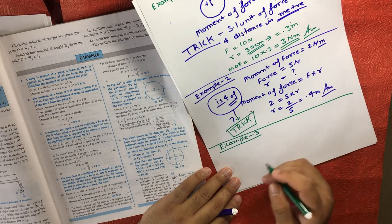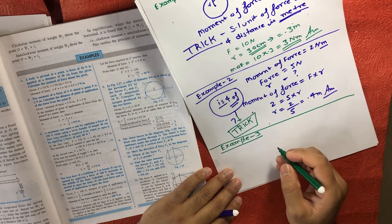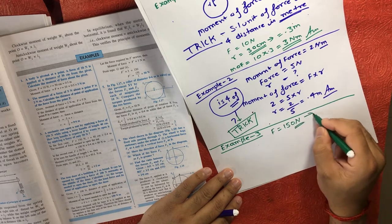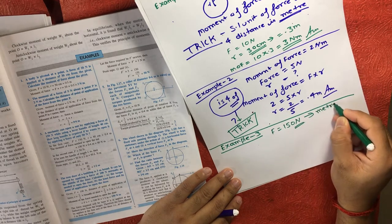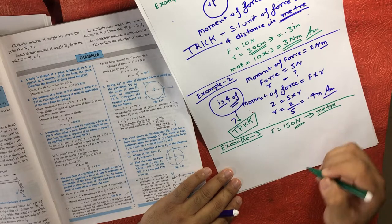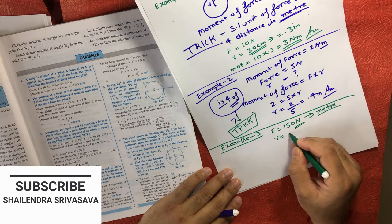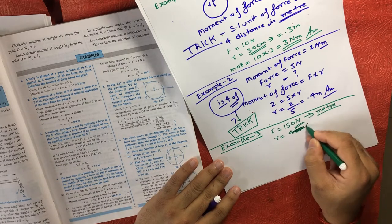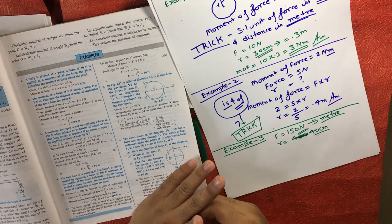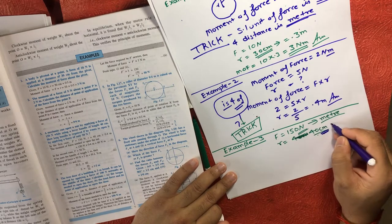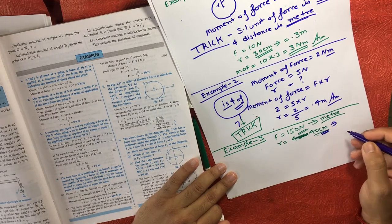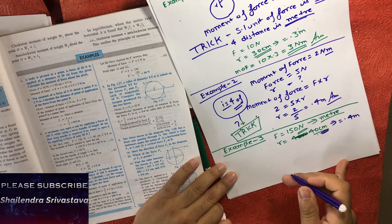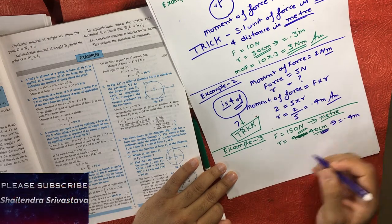So here, F is 150 newton. Whenever the force is in newton, the other unit must be in meters. The length is 40 centimeter — and here is the trick: you need to convert this into meters, so 40 cm becomes 0.4 meter.